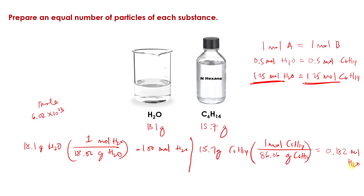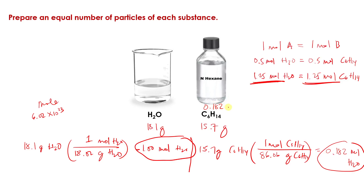Since we need to prepare an equal number of particles, we should base our calculation on the lowest number of particles. The moles tell us the number of particles, so 0.182 is less than 1.00, meaning C₆H₁₄ contains the lowest number of particles. So we should also prepare the same number of particles for H₂O — that is 0.182 moles of H₂O.